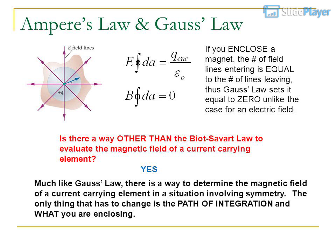Much like Gauss's law, there is a way to determine the magnetic field of a current carrying element in a situation involving symmetry. The only thing that has to change is the path of integration and what you are enclosing.